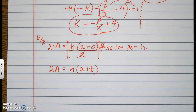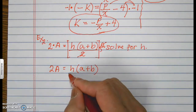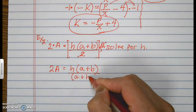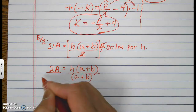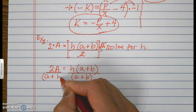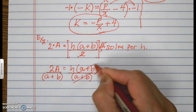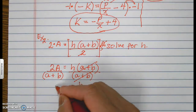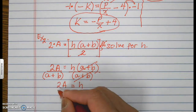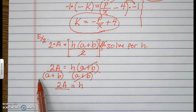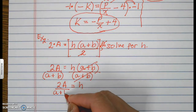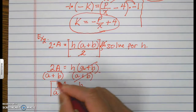To isolate h, divide the right side by the whole of a plus b. Whatever I do on the right, I do on the left. This turns to 1, so h equals 2A all over a plus b — there's a 1 in front, and 1 times any number is that number itself. This is your answer.